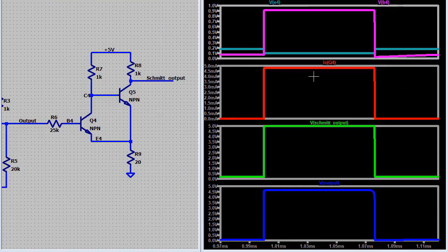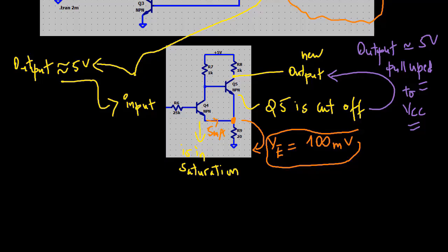The emitter current of Q4 is about 5 milliamperes so the emitter voltage is approximately 100 millivolts and the base is a VBE higher approximately 700 millivolts.